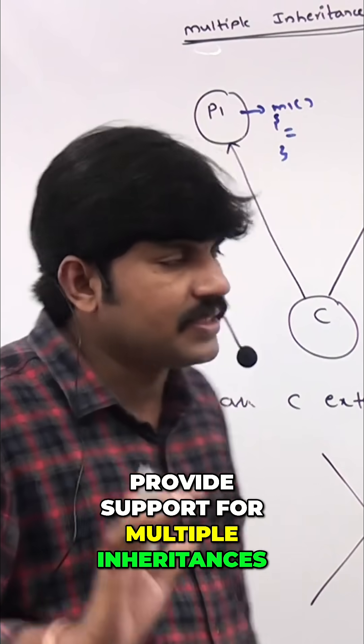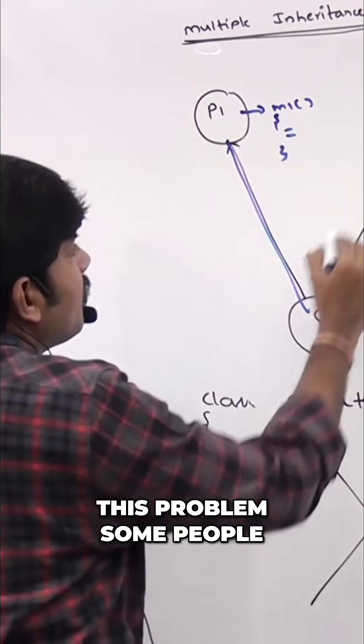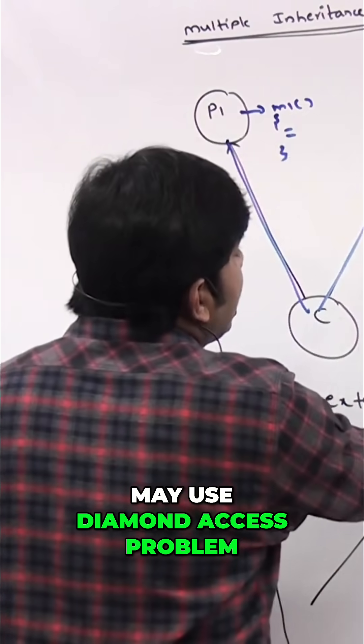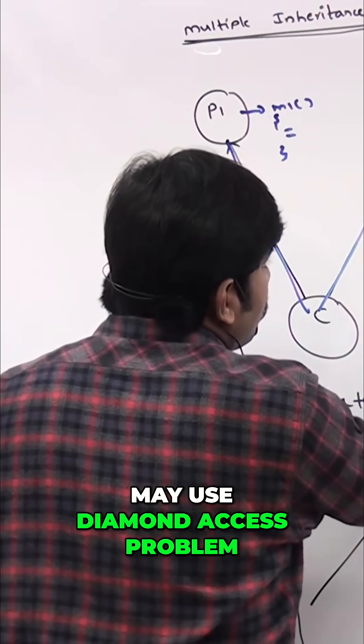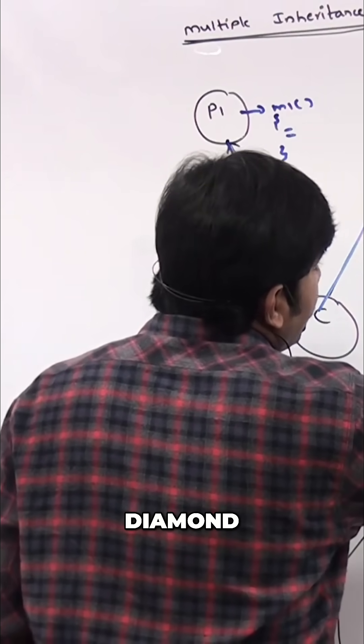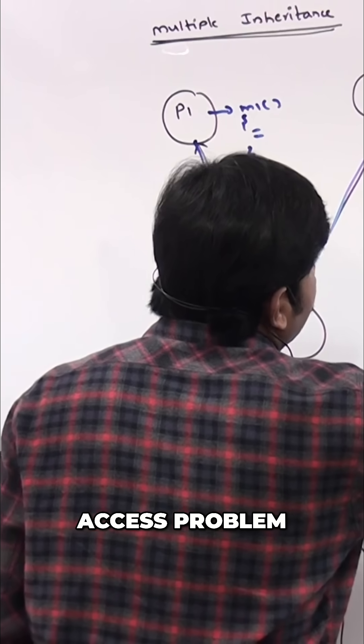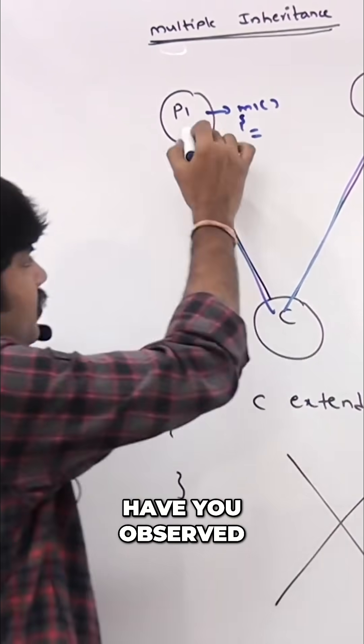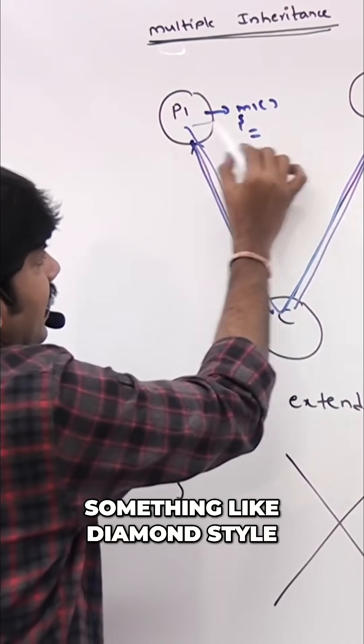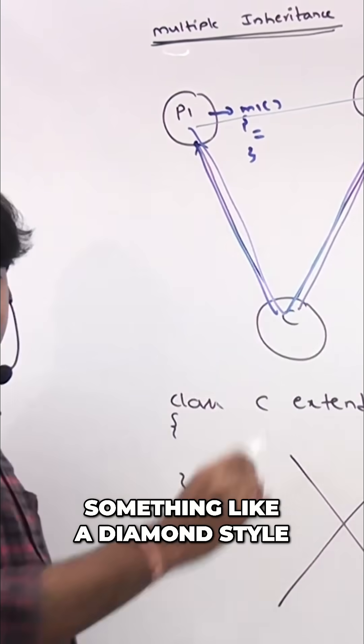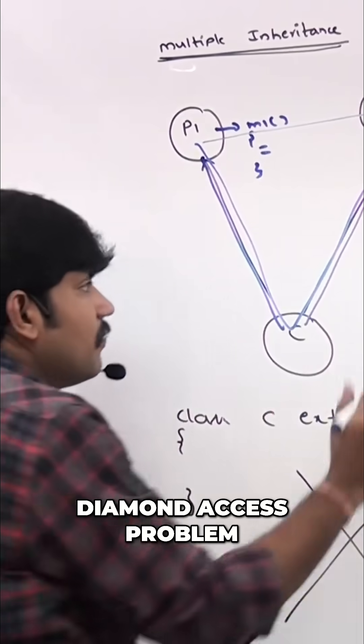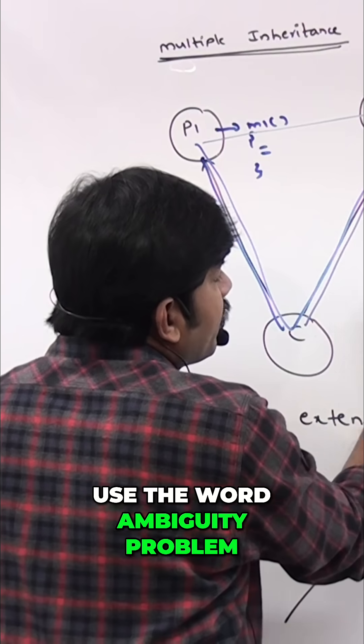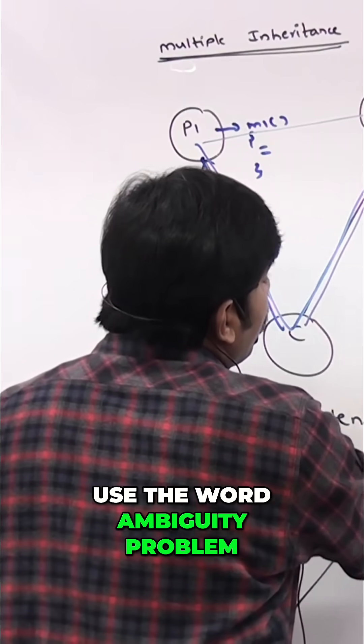Sir, do you know this problem? Some people may use diamond access problem - are you getting diamond access problem? Have you observed? Something like a diamond style - diamond access problem. Or some people may use the word ambiguity problem.